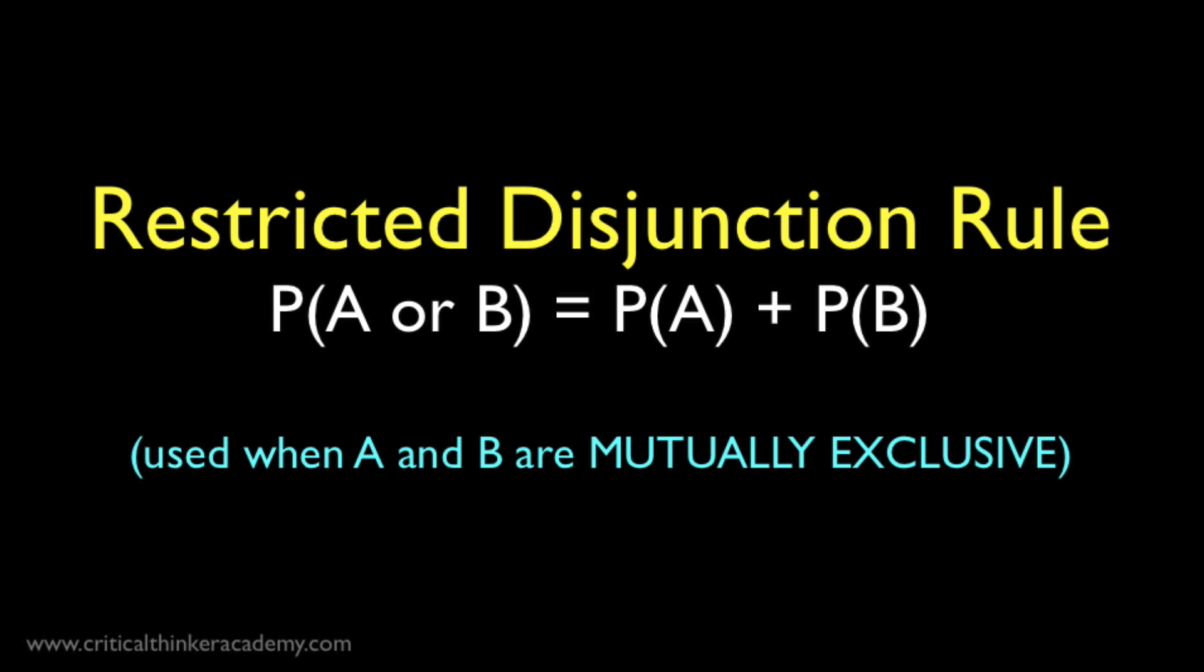Statements of the form A is true or B is true are known as disjunctions in math and logic. So that's where the rule gets its name. There's a more general formulation for this rule, and there's a more restricted special case. In this video, we'll just deal with this special case, which occurs when the two events in question are mutually exclusive, meaning that they can't both occur at the same time.